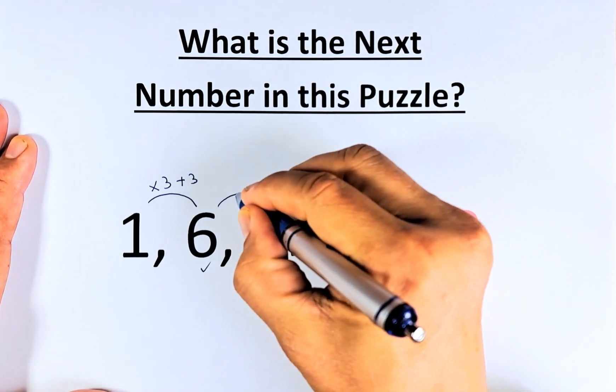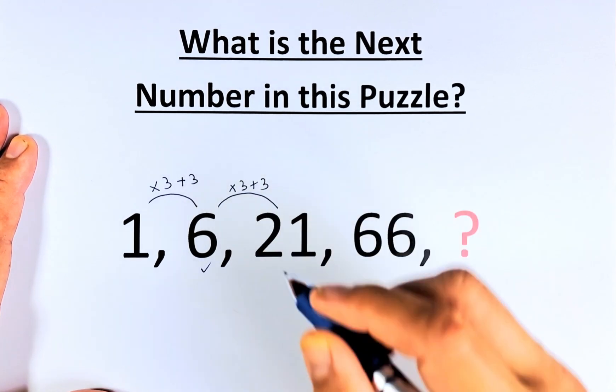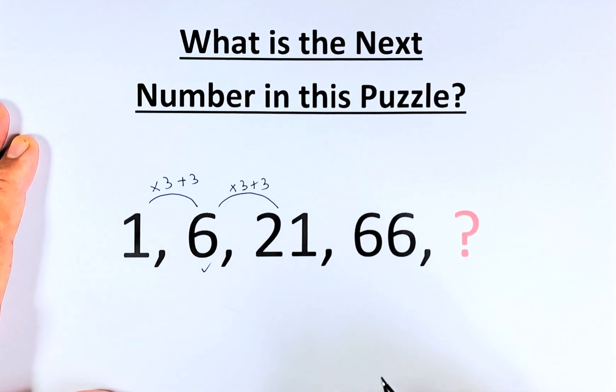Next, from 6 to 21, we are doing the same thing. We are going to multiply by 3 plus 3. So 6 times 3 is 18, 18 plus 3, that's 21. So we are on the right track.